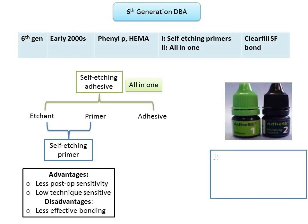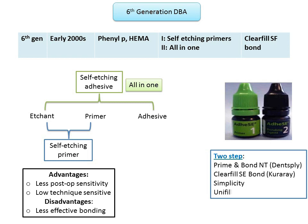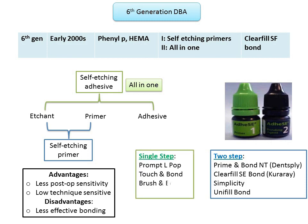Examples of two-step sixth generation systems are Prime & Bond NT by Dentsply, Clearfil SE Bond by Kuraray, Simplicity, and Unifil Bond. Examples of single-step sixth generation DBAs are Prompt L-Pop, Touch & Bond, Brush & Bond, and Xeno by Dentsply.